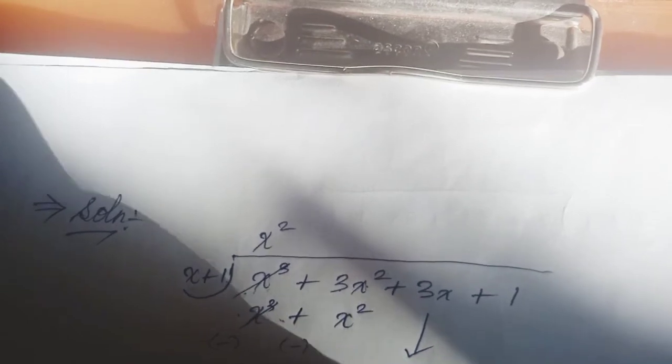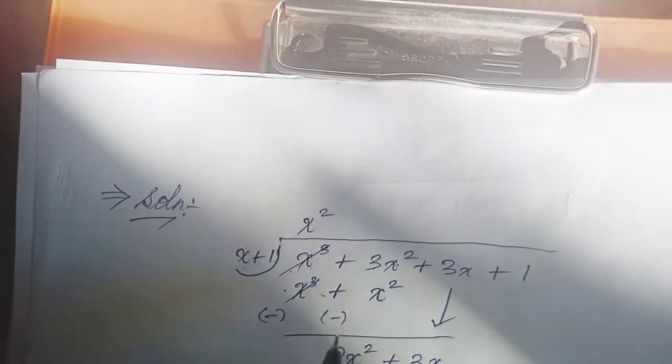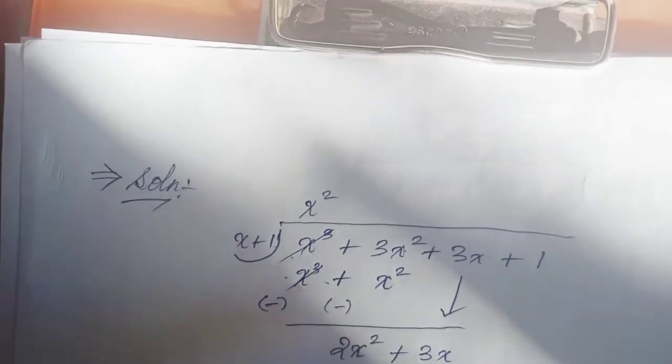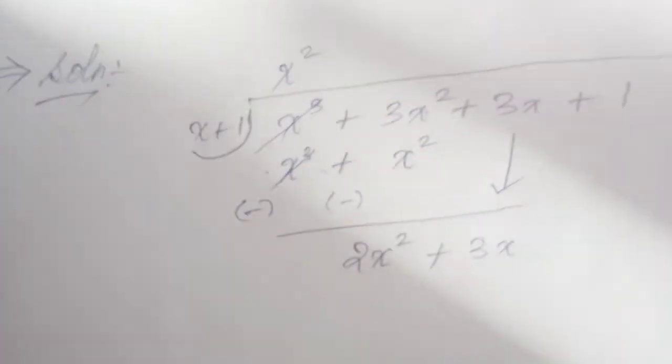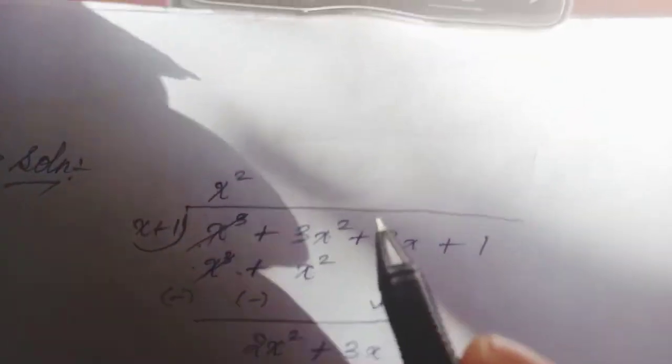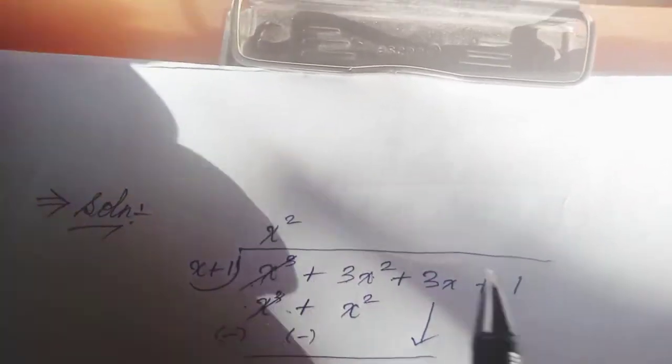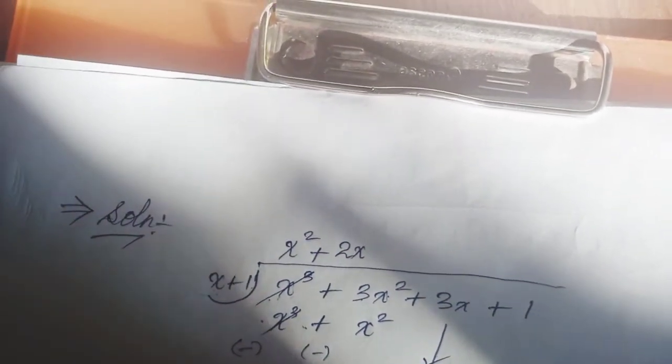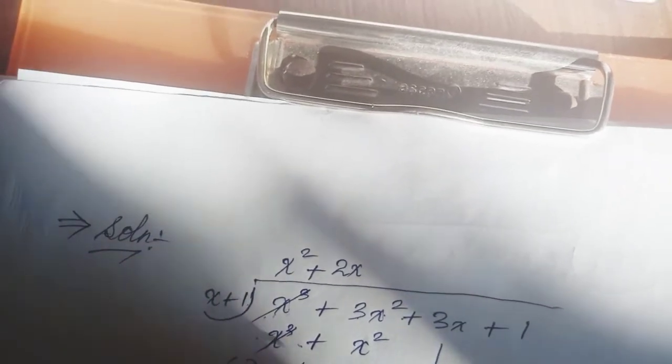Two x squared is equal to 2x multiplied by x. So 2x into x equals 2x squared, plus 2x into 1 equals plus 2x.